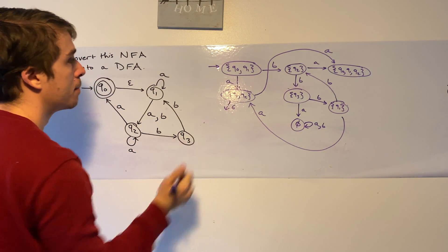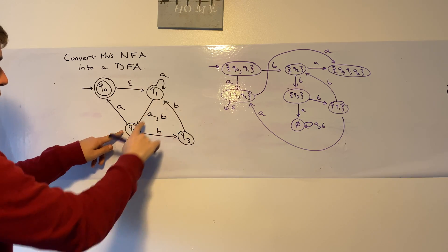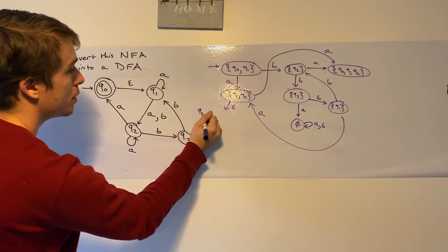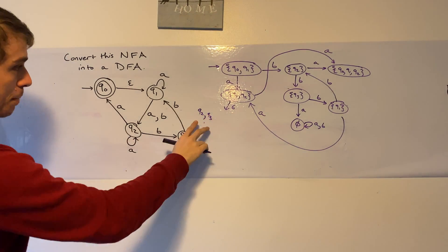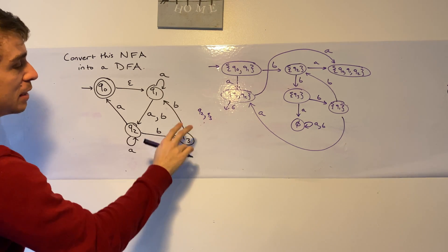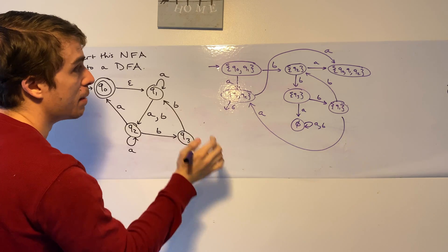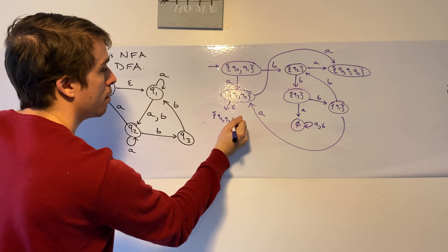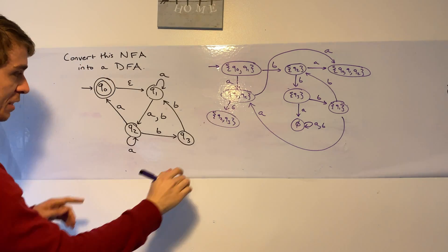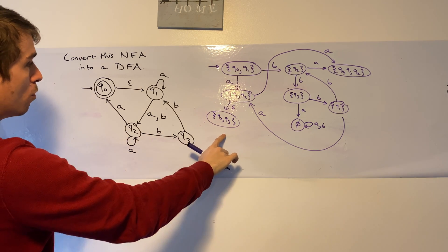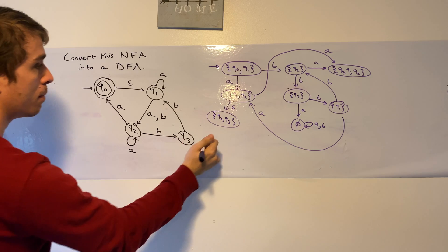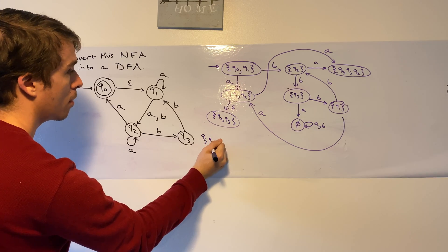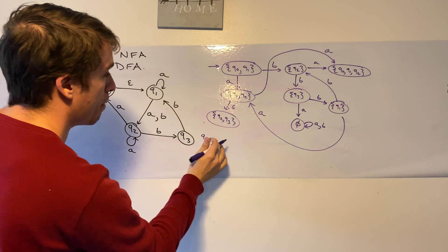Now for {Q1, Q2} on input B: Q1 goes to Q2 on B, and Q2 goes to Q3 on B. The epsilon closure of {Q2, Q3} is itself, so we make the new state {Q2, Q3}. Now for {Q2, Q3} on input B: Q3 can go to Q1, and Q2 can go to Q3. We haven't made that state yet, so we make {Q1, Q3}.